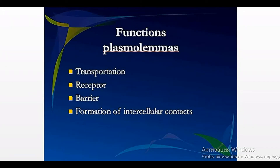Functions of the cell membrane. The cell membrane has different functions. First, maintaining the structural integrity of the cell. Second, regulation of cellular interaction. Regulation of cellular interaction is possible by formation of intercellular junctions — meaning the formation of relations between neighboring cells.